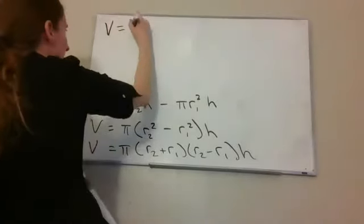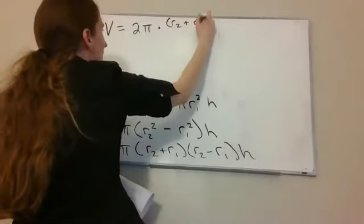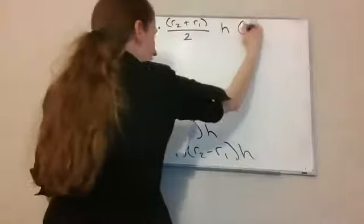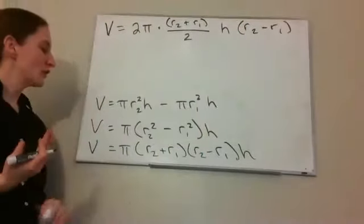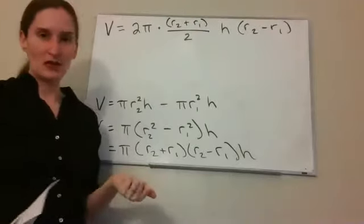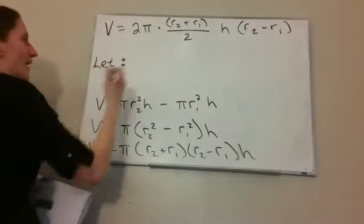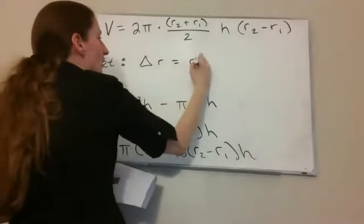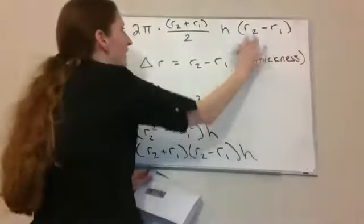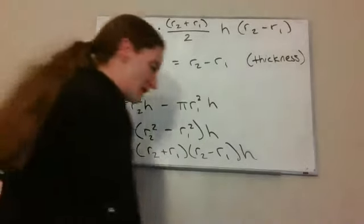We write 2 pi, multiplying by 2, then divide by 2 inside: (R2 plus R1) over 2. On the other side we have H and R2 minus R1. Now let delta R equal R2 minus R1 — that's the thickness of the shell. And let R equal (R2 plus R1) over 2, which is taking the outer radius and inner radius, adding them, and dividing by 2 — that's the average radius of our shell.